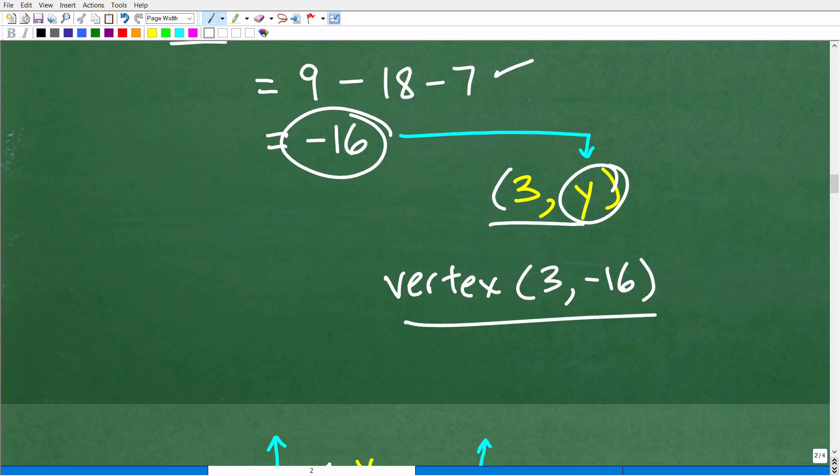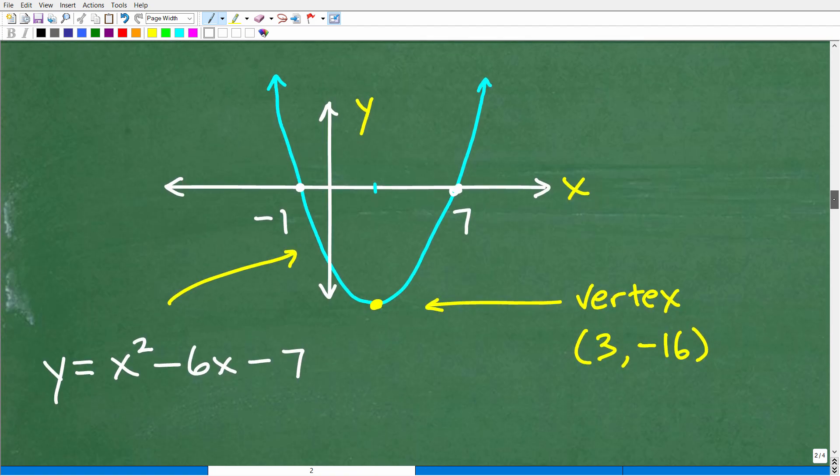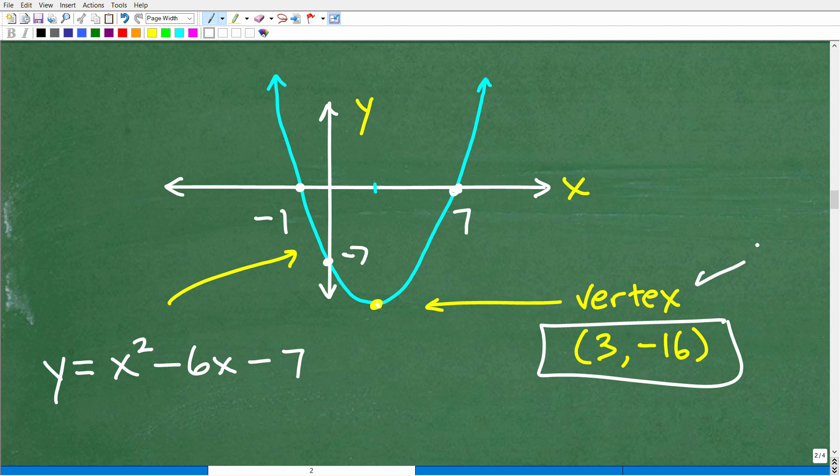So our vertex is 3, negative 16. We are done, and we can kind of put this all together on this graph. This location here is 3, negative 16. Now, it's not to scale. This is kind of way down there, and then this point would be negative 7. That would be our y-intercept. There's more details we can look at the graph of this particular parabola. But anyways, we just use algebra to find the vertex.